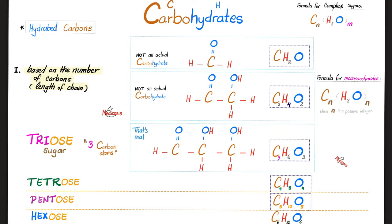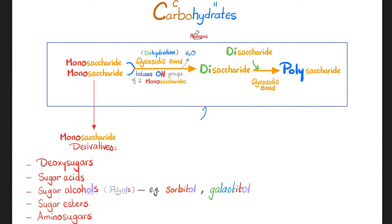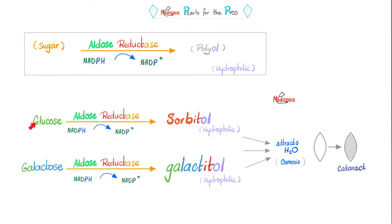Lactose is a hexose sugar with six carbon atoms. We call them carbohydrates because they are hydrated carbons. Lactose is a disaccharide — thanks to lactase, it gives us two monosaccharides: glucose and galactose. Just like glucose can be reduced into sorbitol, galactose can also be reduced into galactitol. These are polyols, i.e. sugar alcohols. If it ends in '-ol,' it's an alcohol.